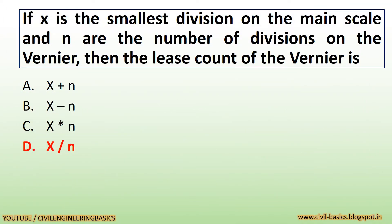If X is the smallest division on the main scale and N is the number of divisions on a vernier, then the least count of the vernier is given by the smallest division on the main scale divided by the number of divisions on the vernier.